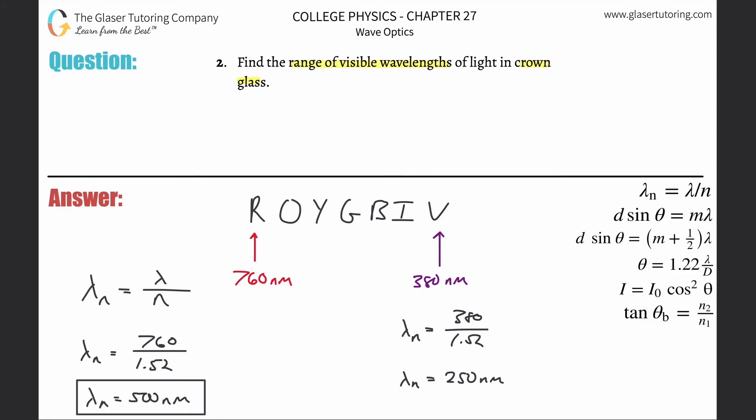If we notice now, the range will be anywhere from 250 nanometers for the violet light all the way up to about 500 nanometers for the red light. Thank you so much for tuning in.